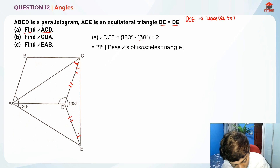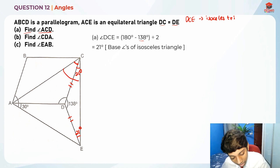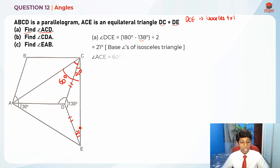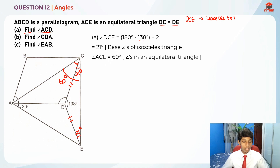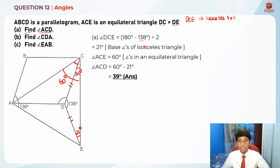So the base angles are each 21 degrees. To find angle ACD, we take 60 degrees minus 21 degrees, giving us 39 degrees. We take ACD as 60 degrees — since angle ACE is 60 degrees — minus 21 degrees, which equals 39 degrees. That's the answer for Part A.